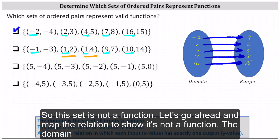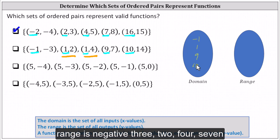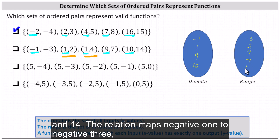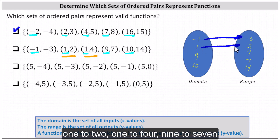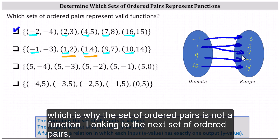Let's go ahead and map the relation to show it's not a function. The domain of the relation is negative one, positive one, nine, and ten. The range is negative three, two, four, seven, and fourteen. The relation maps negative one to negative three, one to two, one to four, nine to seven, and ten to fourteen. Notice the input of positive one has two corresponding outputs, which is why the set of ordered pairs is not a function.